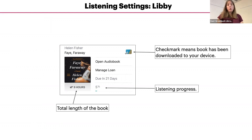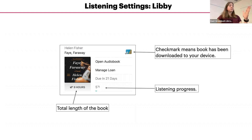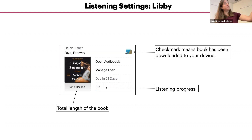If you tap on 'Open Audiobook,' it will open the book and start playing automatically. Your progress will be saved when you close out of an audiobook and reopen the app, so if you want to stop at a particular point, you can just pause it and close the app — when you go back, it's right in the same spot. You can also see your listening progress underneath the due date, for example showing that you've listened to 5% of the book so far.